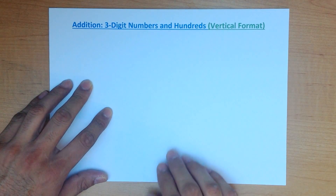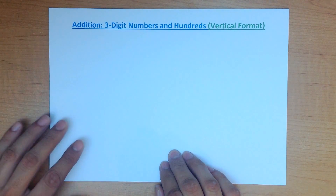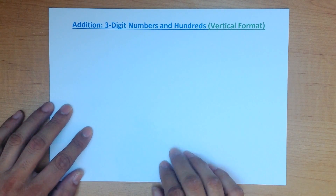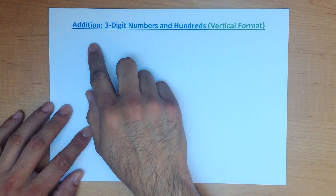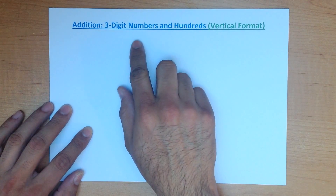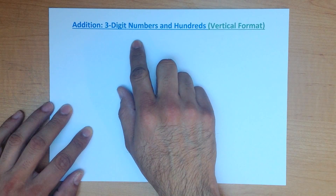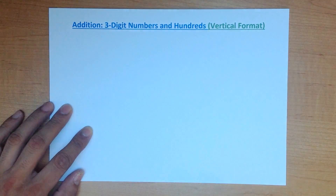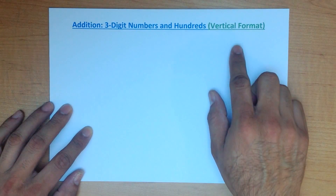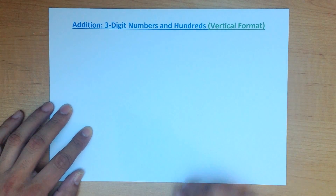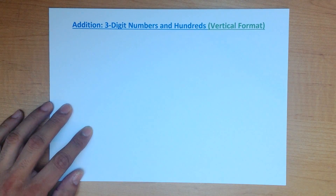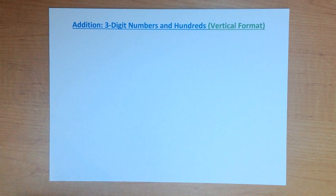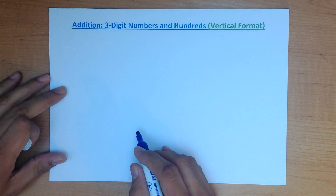In this tutorial we are going to go through addition of three-digit numbers and hundreds using the vertical format. So let's start with a nice easy example.